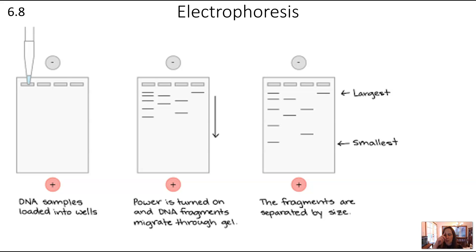The smallest fragments are the most nimble — they're able to weave through the gel matrix most easily, so they move the fastest. The fragments that move the farthest on the gel are therefore the smallest fragments.